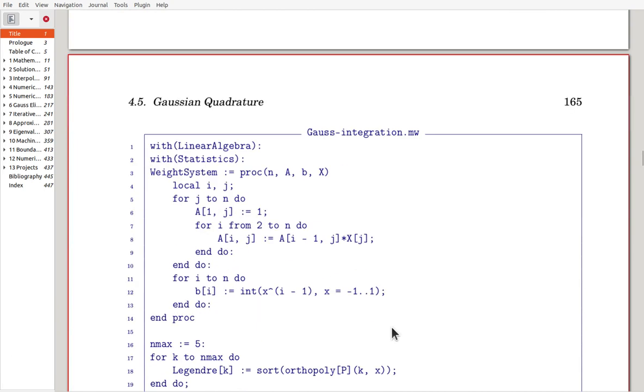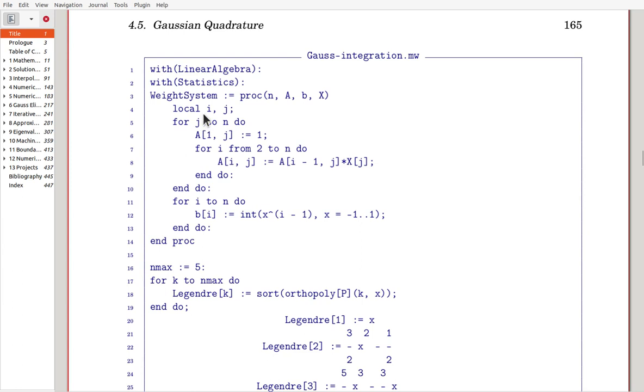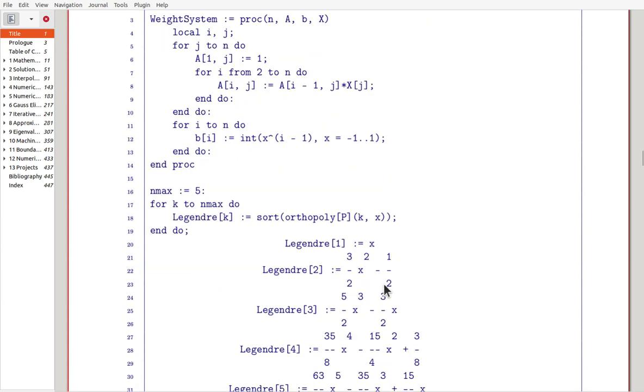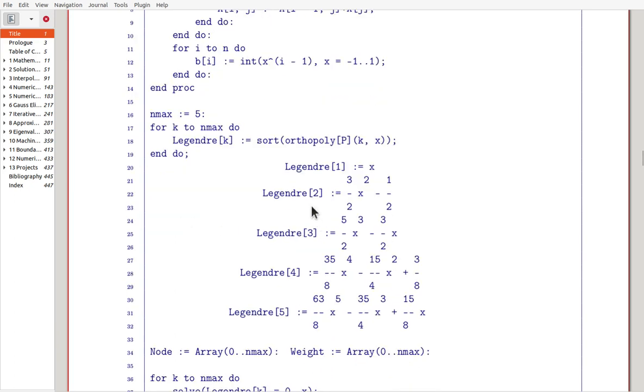Here we have implementation in Maple. Now that is rate system. Here the output is this one, a and b. That function is defined here. And we try to get here Legendre Polynomial from orthopoly. If you choose option p, then that is Legendre Polynomial. It is sorted so that from highest order term it's displayed.